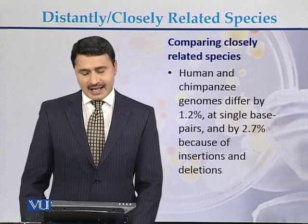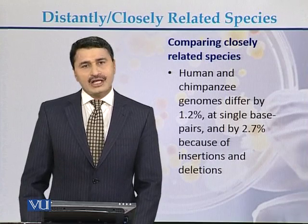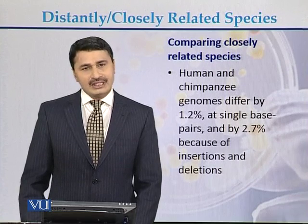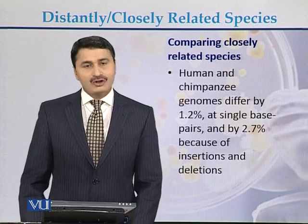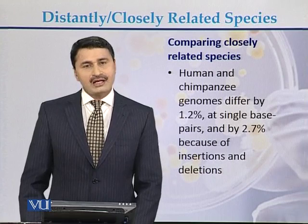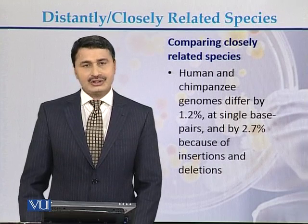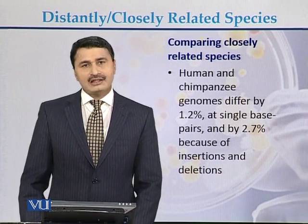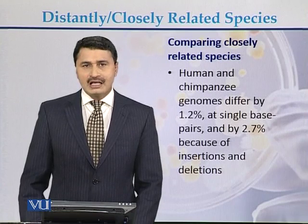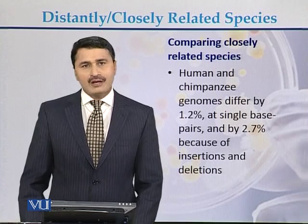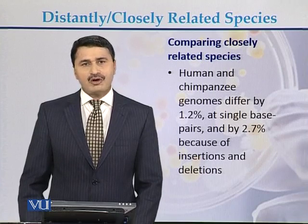If we compare the genomes of humans and chimpanzees, they differ from each other by approximately 1.2% at the single base pair level, and up to 2.7% due to insertions and deletions. Overall, the difference between the human and chimpanzee genomes is approximately 1 to 1.5%.